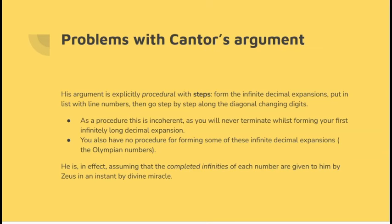And also, you've got no procedure for forming the infinite decimal expansion of the Olympian numbers. You can never write them down. In effect, assuming completed infinities are given to him by Zeus. By some divine miracle.